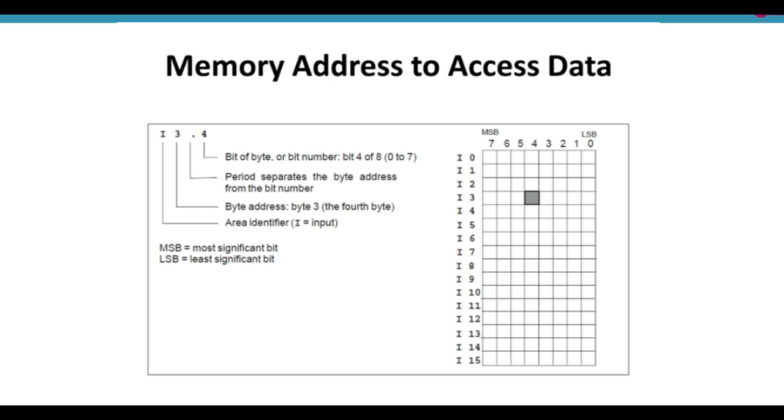3 is the byte address, byte number 3, which is in calculation the fourth byte: 1, 2, 3, and 4. This is the fourth byte. The period is the separator that separates the byte address from the bit number. 4 is the bit of byte, or bit number 4.